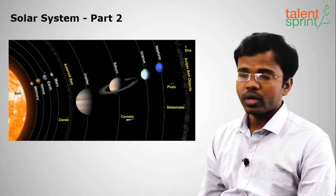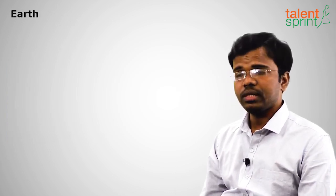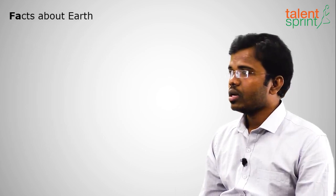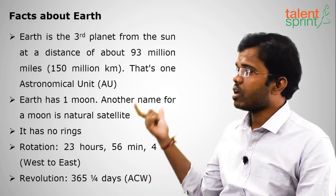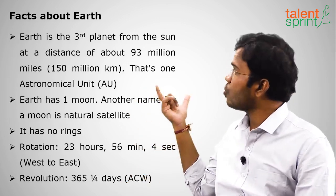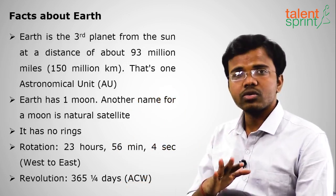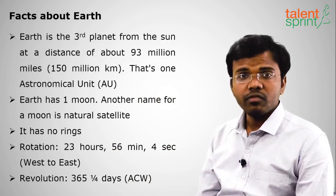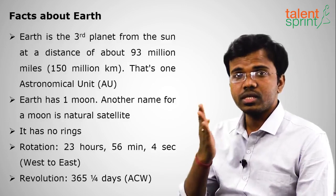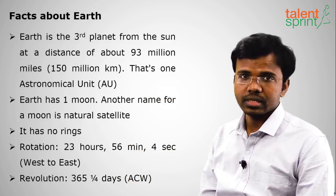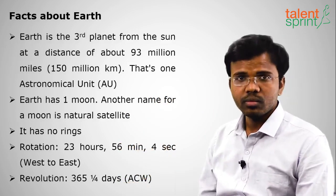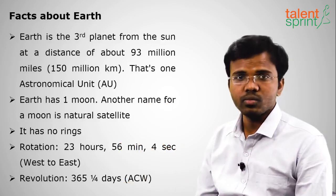Moving on to Earth, which we live on — this is our Earth which supports life. It is the third closest planet from the sun. The distance from the sun to Earth is 150 million kilometers, which is equal to one Astronomical Unit (AU). In miles, that is 93 million miles. Earth has one moon; Venus and Mercury don't have any moons.